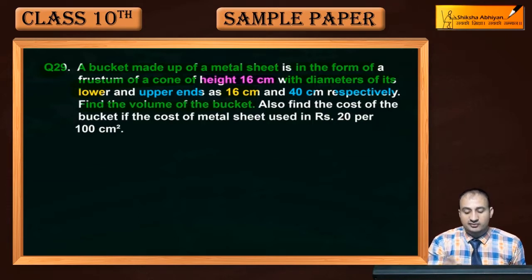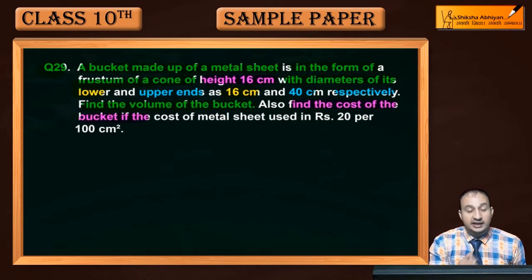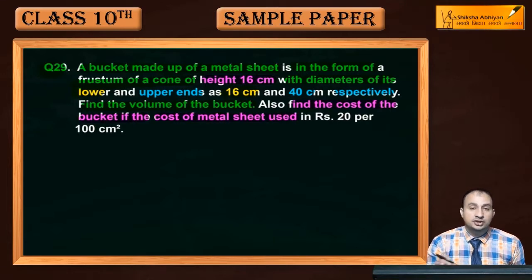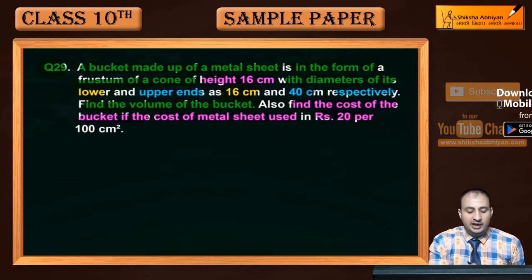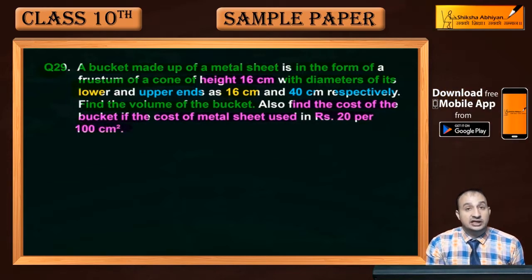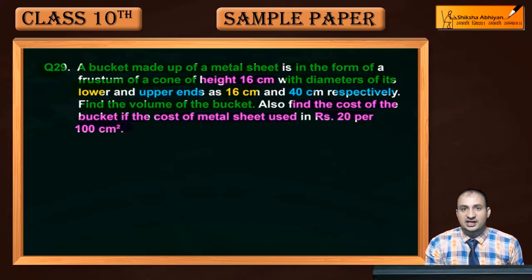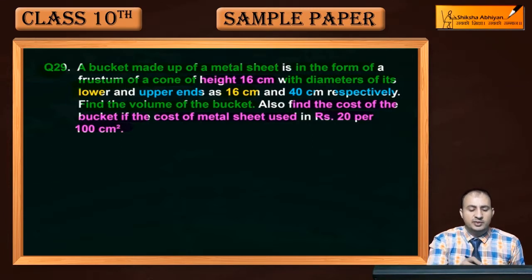You have to find: first, the volume of the bucket, and second, the cost of the metal sheet used. The cost of the metal sheet is ₹20 per 100 cm², meaning ₹20 is charged for every 100 cm² of sheet.